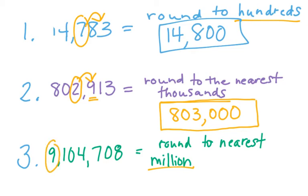Rounded to the nearest million, I circle the number in the millions. I go to the neighbor and I say five or more, raise the score, four or less, let it rest. I'm going to let it rest. The number after the millions turns to a zero. So it's closer to nine million than it is 10 million.